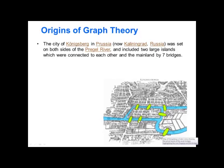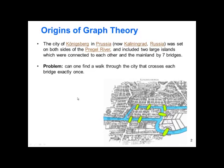The only way to get to the islands was via these bridges. The problem, so somebody was curious about this apparently, was can one find a walk through the city that crosses each bridge exactly once?